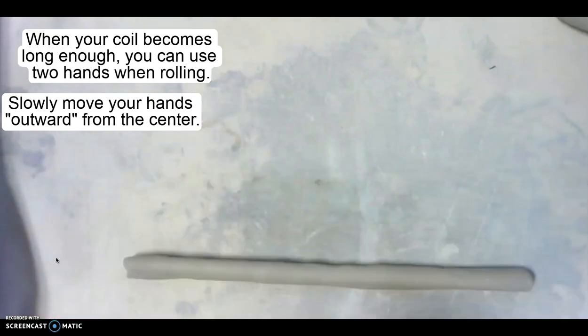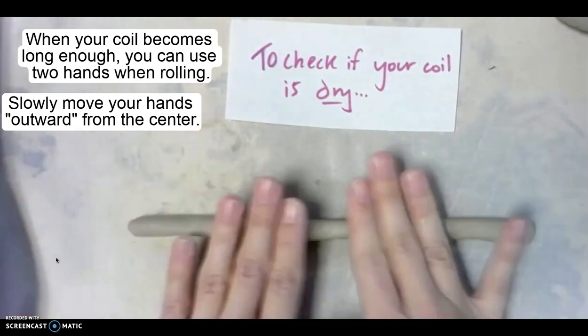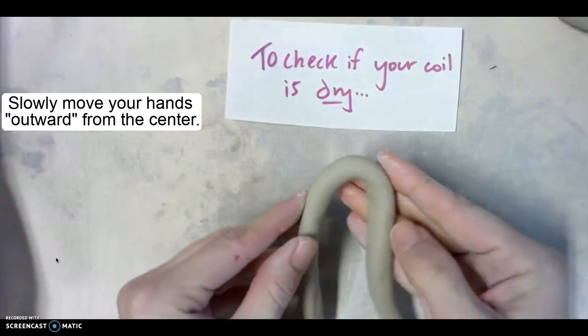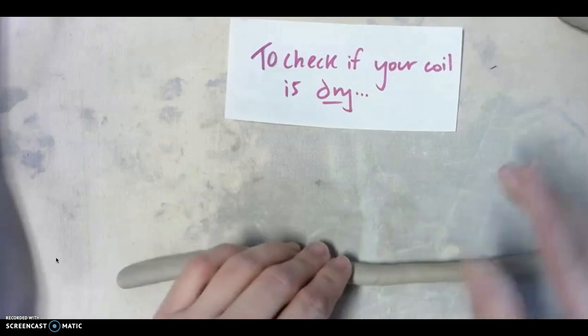Now, a couple things. To check if your coil is dry, because sometimes your clay is dry, so what you can do is actually take your coil and bend it, and if this part cracks, then you know your clay is too dry and you need to make it wet again.